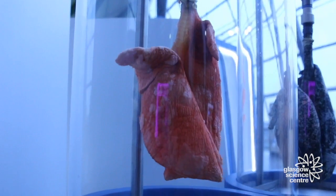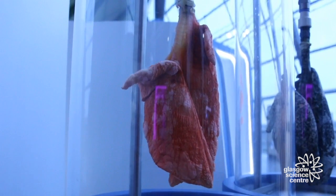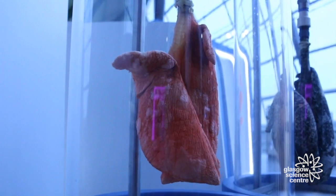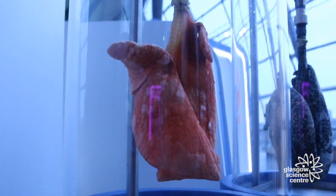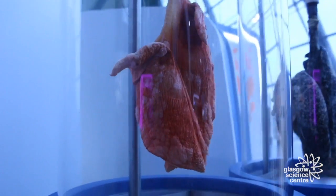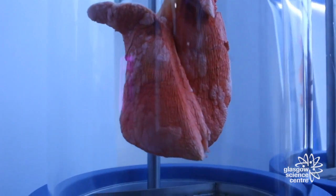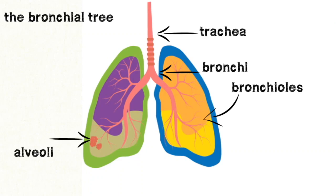Our lungs are located in our chest and inflate and deflate using a muscle called the diaphragm. Inside our lungs, a gas exchange takes place where the oxygen that we breathe in is replaced by carbon dioxide as we breathe out. The bronchial tree contains the trachea, bronchi, bronchioles, and alveoli — all of which we will show during our dissection.